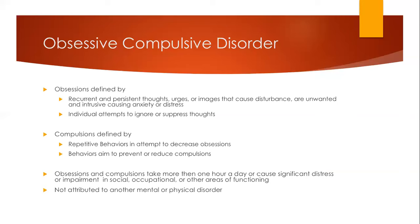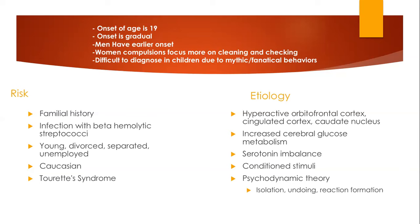The clinical course of OCD is that the average onset is about 19 years old, and it occurs gradually - it doesn't happen all at once. Men tend to have earlier onset. Women tend to have more cleaning and organizing compulsions. It's very difficult to diagnose in children. Although onset is typically listed as 19 years old, there's a lot of research suggesting it's actually a lot earlier, because children often have magical thinking and fantasy play and do those compulsive things naturally, like avoiding sidewalk cracks, making it hard to distinguish OCD from typical child-like behaviors.